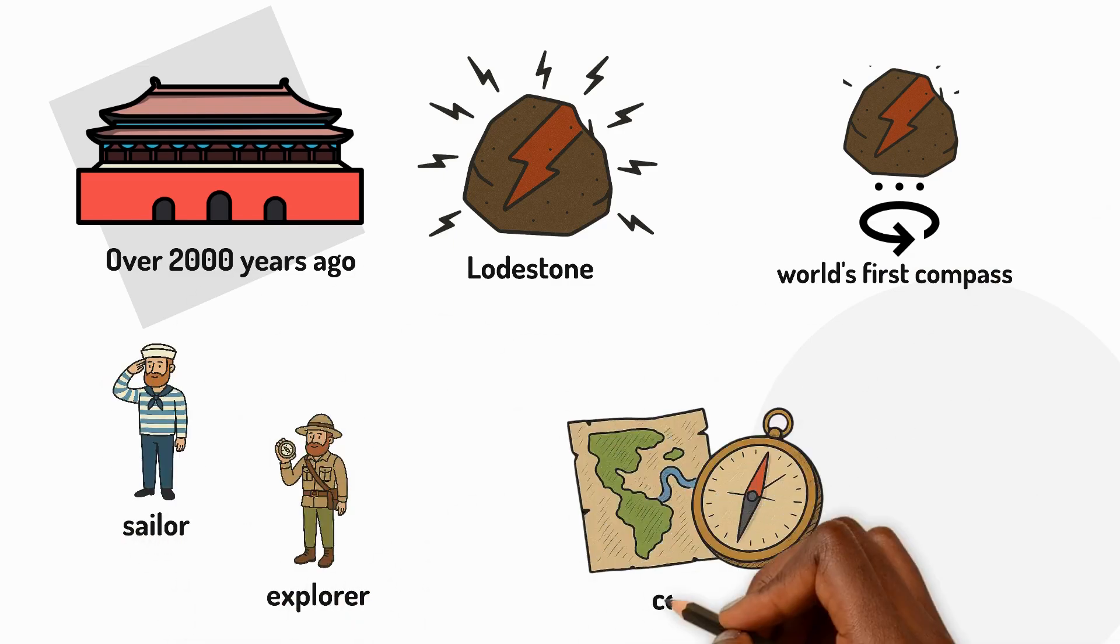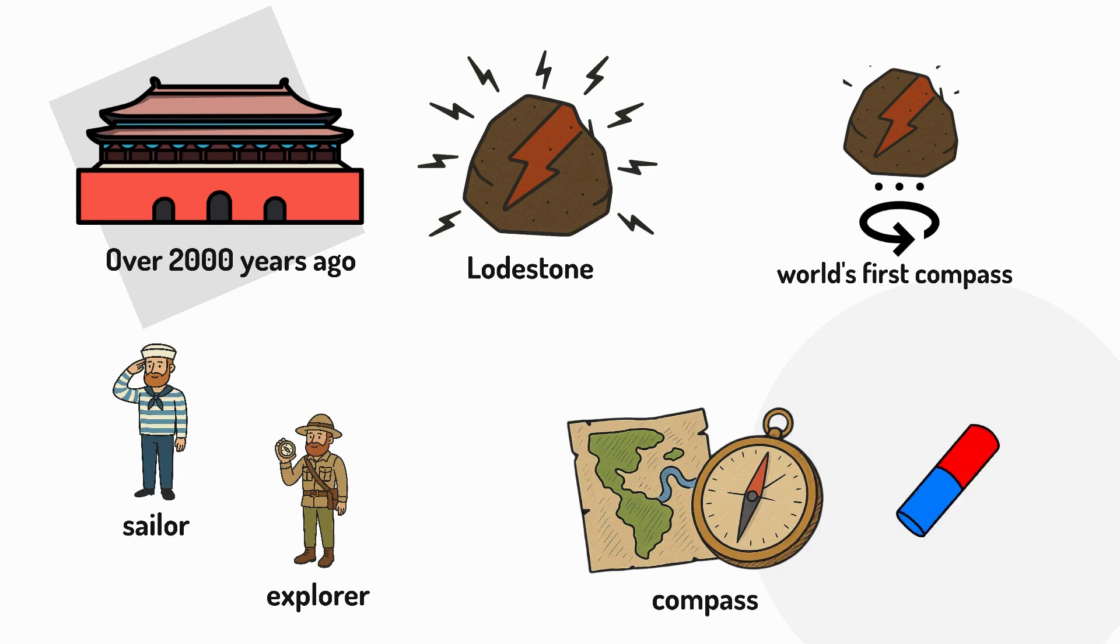Sailors and explorers used compasses to find their way across land and sea, long before modern technology. But how does a compass actually work? A compass is simply a magnet that can spin freely. The tip of the needle always points north. But why?